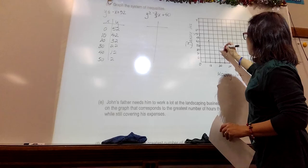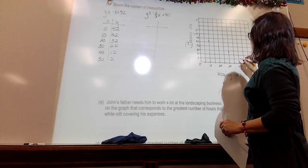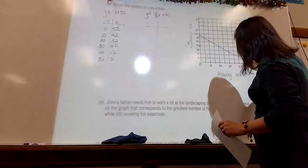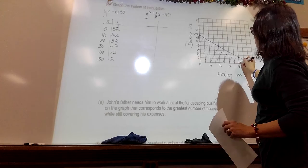Not perfect, 0, 52, 10, 42, 20, 32, 30, 22, 40, 12, 50, that's 2. That's a solid line, and it's Y is less than, so I'm going to shade underneath it.